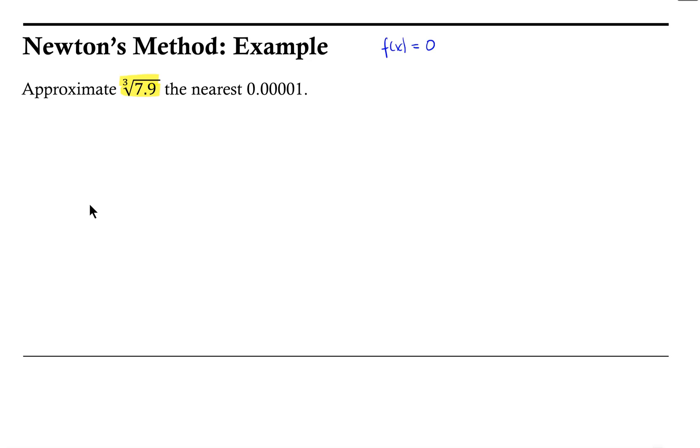In doing this, probably the easiest way to go about creating that function is to think of this value we're trying to approximate as the solution to an equation. So we're interested in x equal to the cube root of 7.9 and work backwards to build a function for which we would be interested in equaling 0.